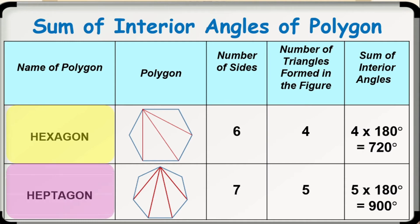Also, we have a heptagon, a seven-sided polygon. As shown on the figure, there are five triangles formed. Thus, to get the sum of the interior angles, we multiply 5 with 180 degrees. Therefore, the sum of the interior angles of a heptagon is 900 degrees.